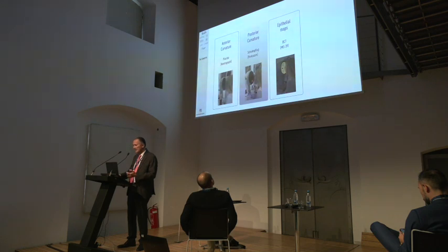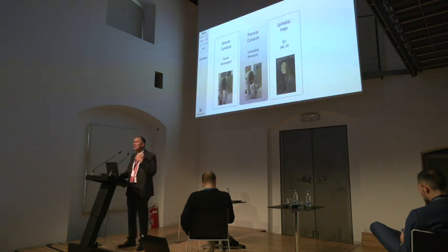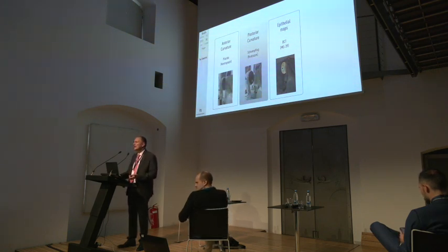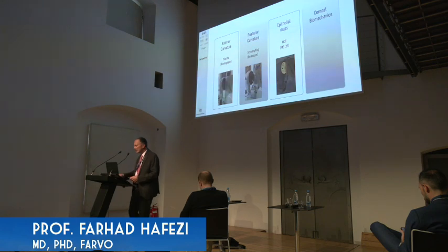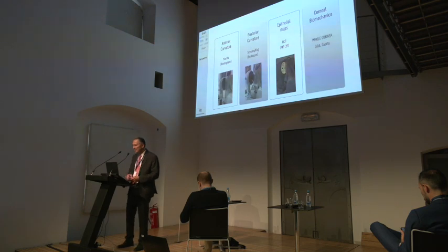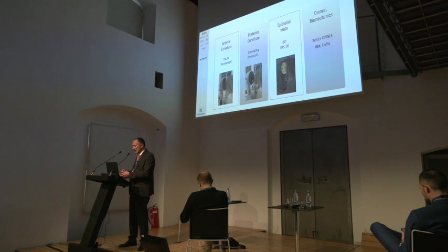If you take keratoconus as an example, this is not a disease of the shape — it's a disease of biomechanics. We simply had no means to measure biomechanics for the last 100 years, that's why we measured shape. But before shape come changes in biomechanics, and maybe before changes in biomechanics come changes in the inflammatory status. But looking at biomechanics, we now finally have a machine that can measure the total response of the cornea.